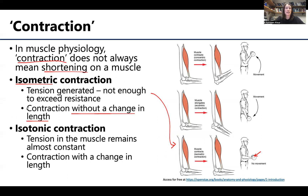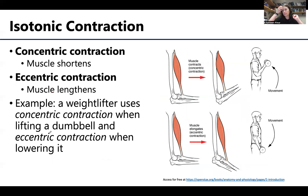The other type of contraction is isotonic contraction, where you do see external movement associated with the muscles. The force of contraction in the muscle remains almost constant while the muscle changes in length. There are two types of isotonic contraction. Concentric contraction is what most of us think about — when I talk about the actions of muscles in upcoming videos, I'm talking about their concentric contractions. When I say the biceps brachii will flex the elbow, that's in terms of concentric.